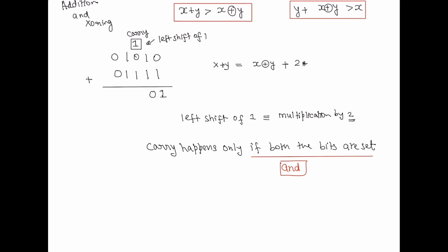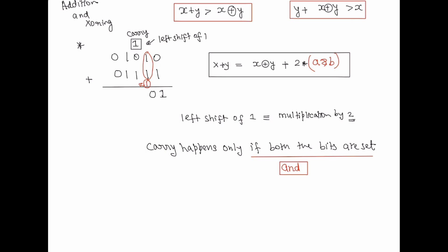This gives us the key formula: when you add two numbers x and y, it equals x XOR y plus 2 times (x AND y). The carry shifts left by one position, and a left shift is equivalent to multiplication by two. This is the formula we will use to solve the question optimally. If you knew this formula, the question becomes straightforward.